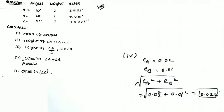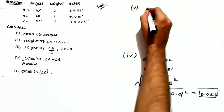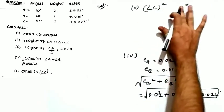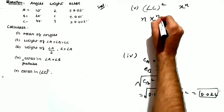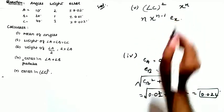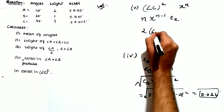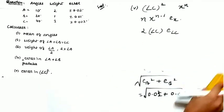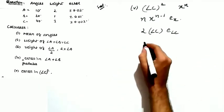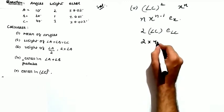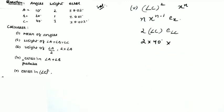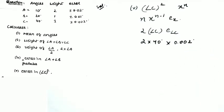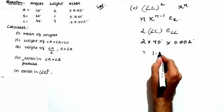The last part asks for the error in angle C squared. The formula for error in x^n is n · x^(n-1) · ex. So it is 2 × angle C × error in angle C = 2 × 40° × 0.002° = 1.6 degrees. This is the error in the square of angle C.